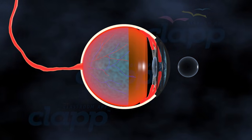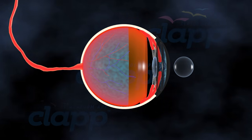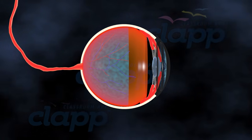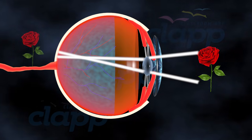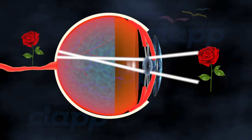The lens is a transparent, flexible structure located behind the iris in your eye. It's responsible for focusing light onto the retina, allowing you to see objects clearly.